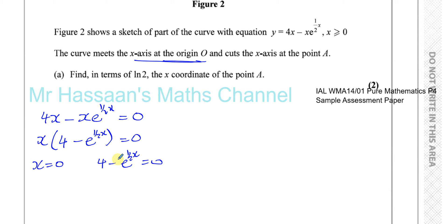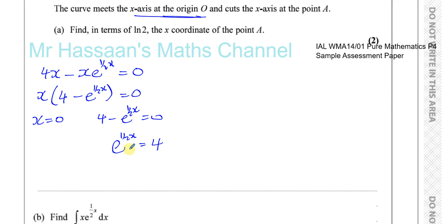Rearranging, we add e to the power of a half x to both sides, giving us e to the power of a half x equals 4. To solve this exponential equation, we take the log to the base e — that is, the natural log (ln). We take ln of both sides, giving ln(e^(½x)) = ln4.